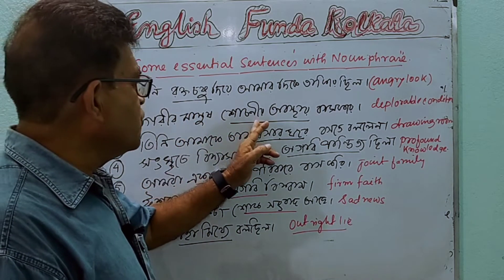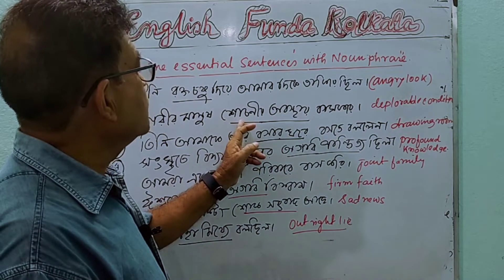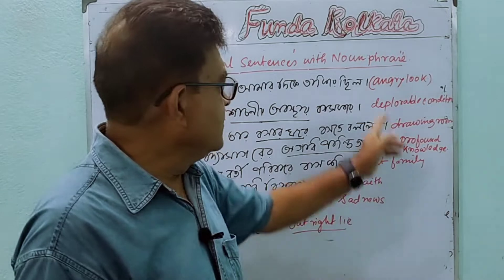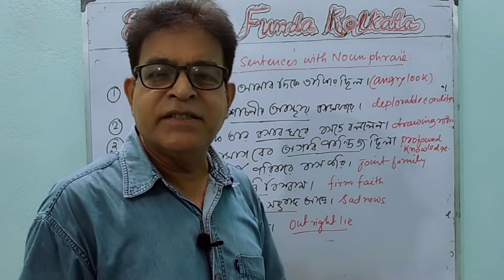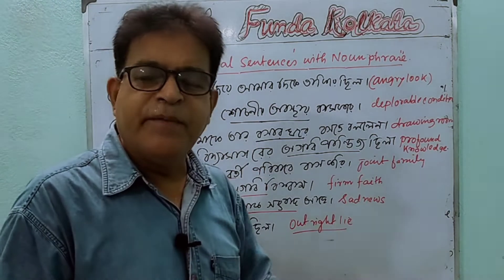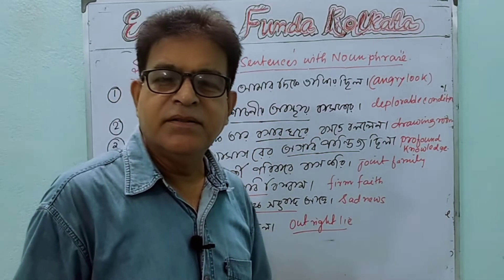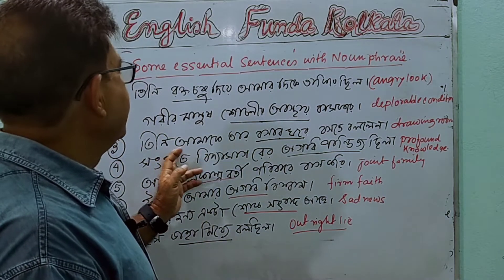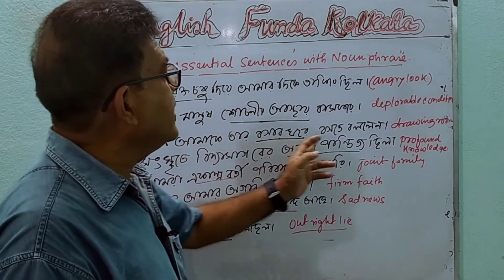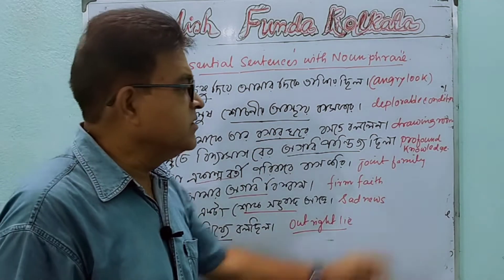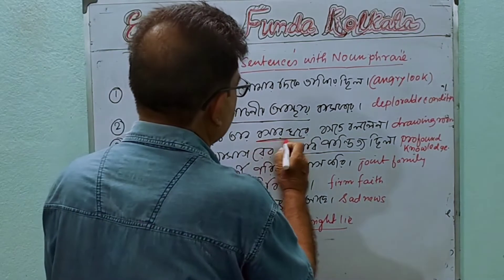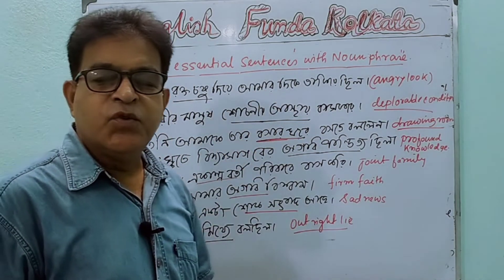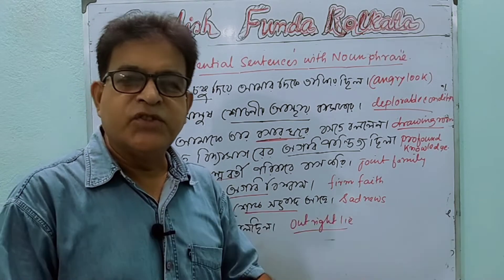Likewise, in Bengali — 'Gori Manos Suconyo Abosthaya Vas Gori, Suconyo Abosthaya Taka Kotharche' — this is a noun phrase: deplorable condition. The poor people live in deplorable condition.